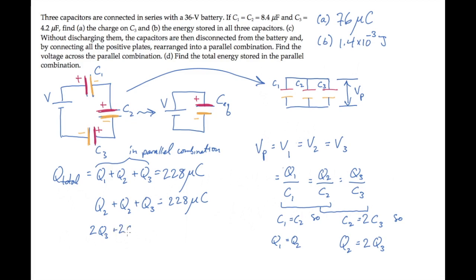So I'll replace that and rewrite this expression one more time, which allows us to solve for the charge on capacitor 3 in this parallel combination. That equals 228 microcoulombs divided by 5, 45.6 microcoulombs. We can substitute that into this expression along with the capacitance and calculate to find that there's 11 volts across these capacitors in the parallel combination.